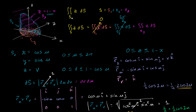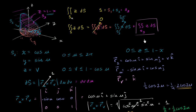We're now in the home stretch. We just need to evaluate this third surface integral, which is over the top part of our little chopped cylinder right over here. So let's try to think of a parameterization.